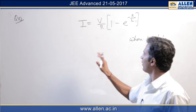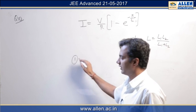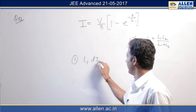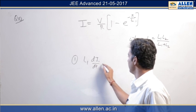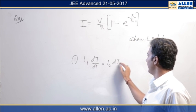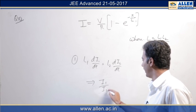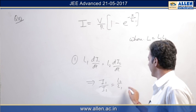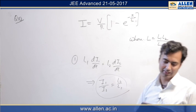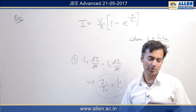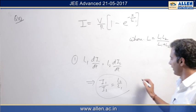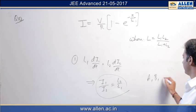Now, since L1 and L2 are in parallel, we have another relation: L1 di1 by dt equals L2 di2 by dt. This would yield us i1 by i2 as L2 by L1. Using this inverse relationship, we can establish all three answers, that is A, B, and C.